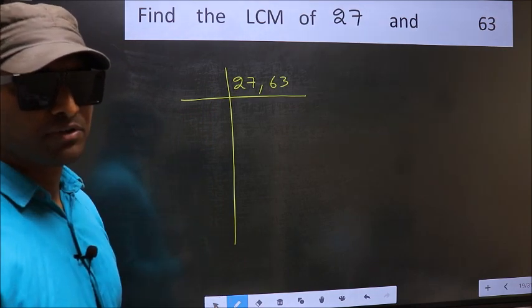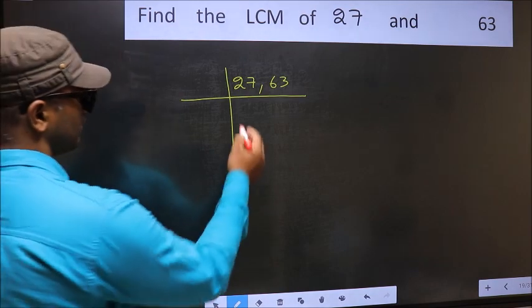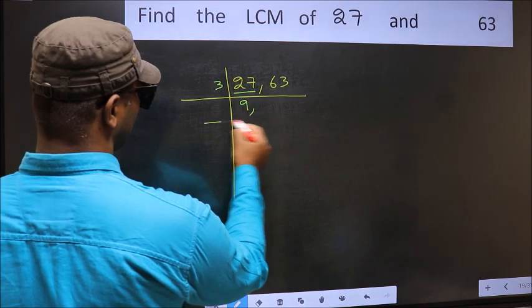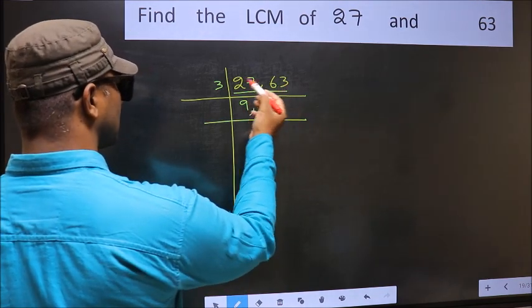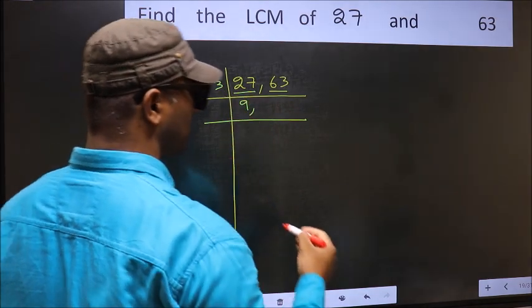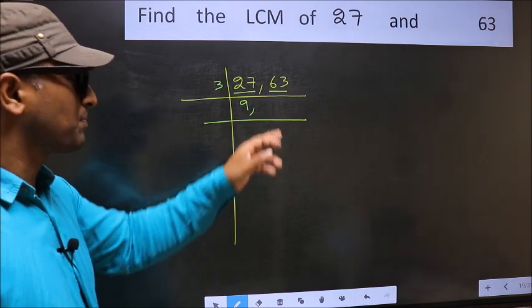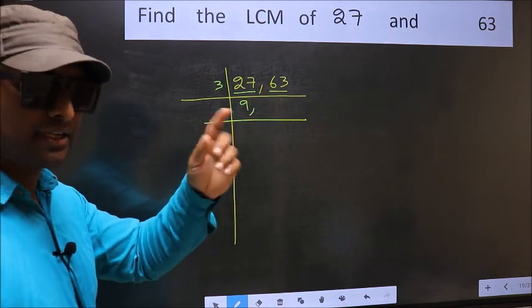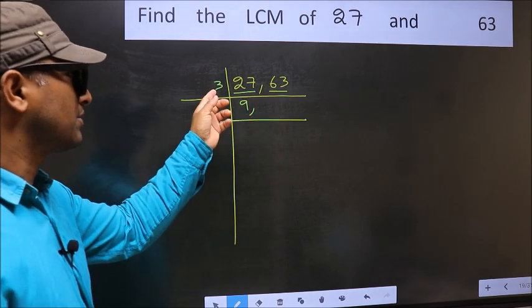Now focus on the first number which is 27. 27 is 3 times 9 equals 27. The other number 63. To check whether 63 is divisible by 3, add the digits: 6 plus 3 equals 9, and 9 is divisible by 3. So this number is also divisible by 3.